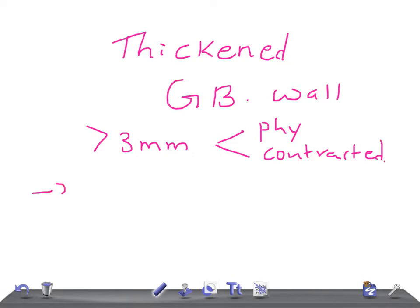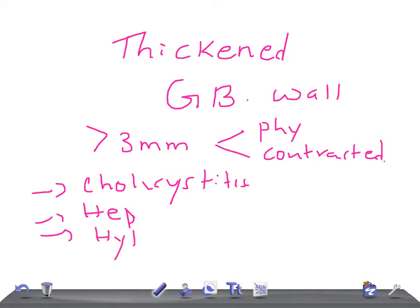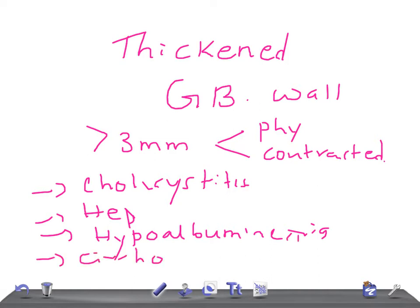So what are the causes for a thickened gallbladder wall? Number one is cholecystitis, then we have hepatitis, then hypoalbuminemia, then cirrhosis, congestive heart failure (CHF), and renal failure.